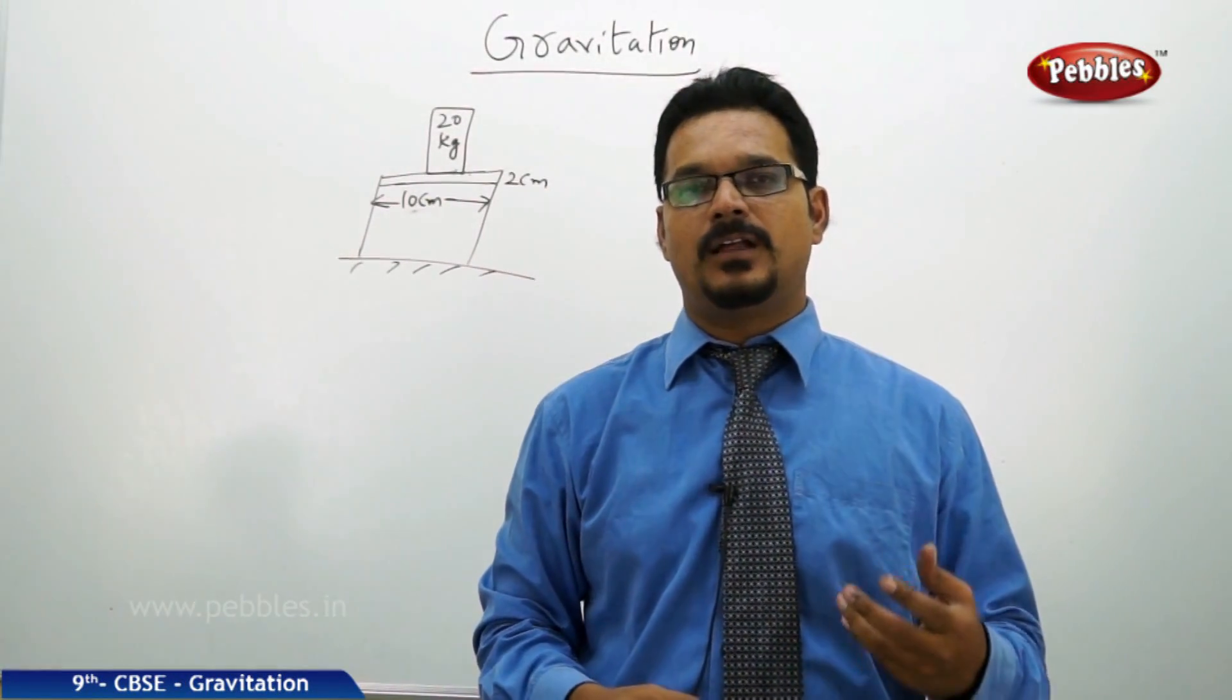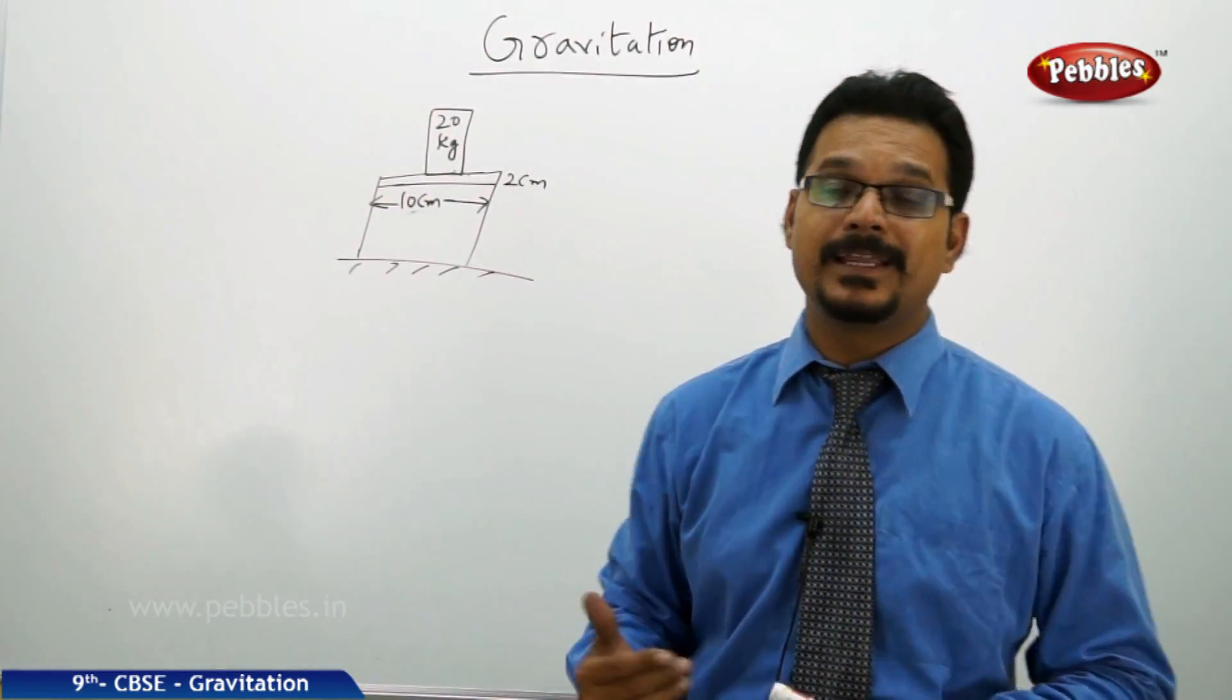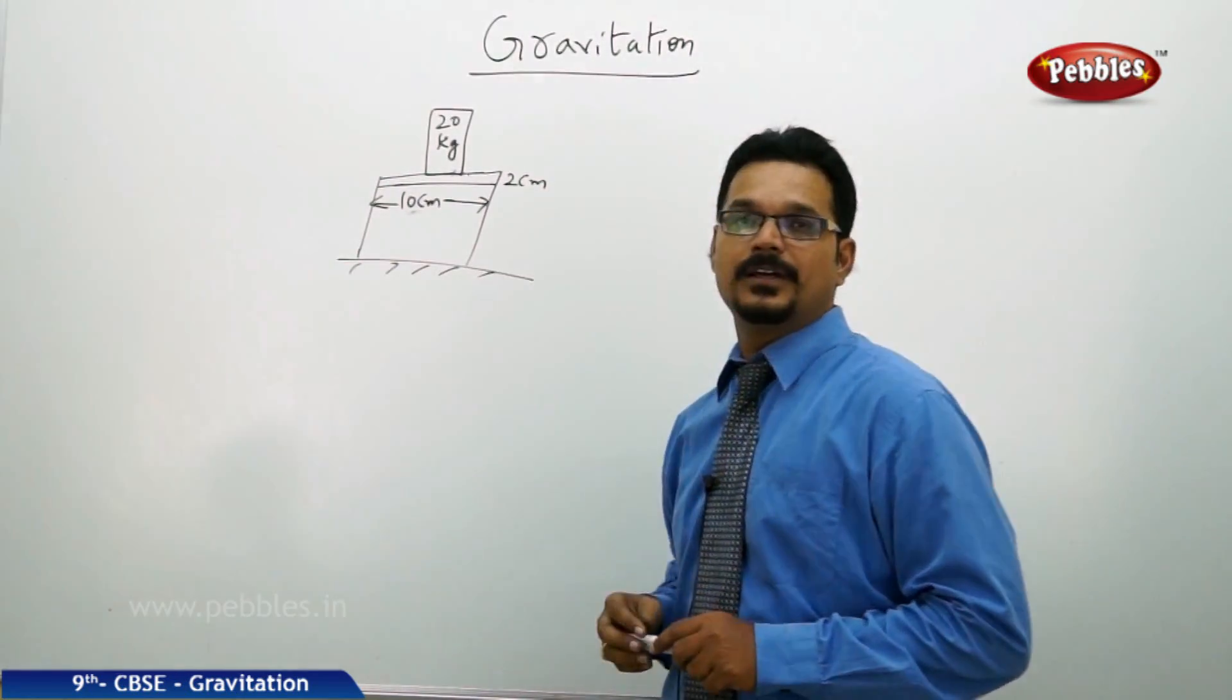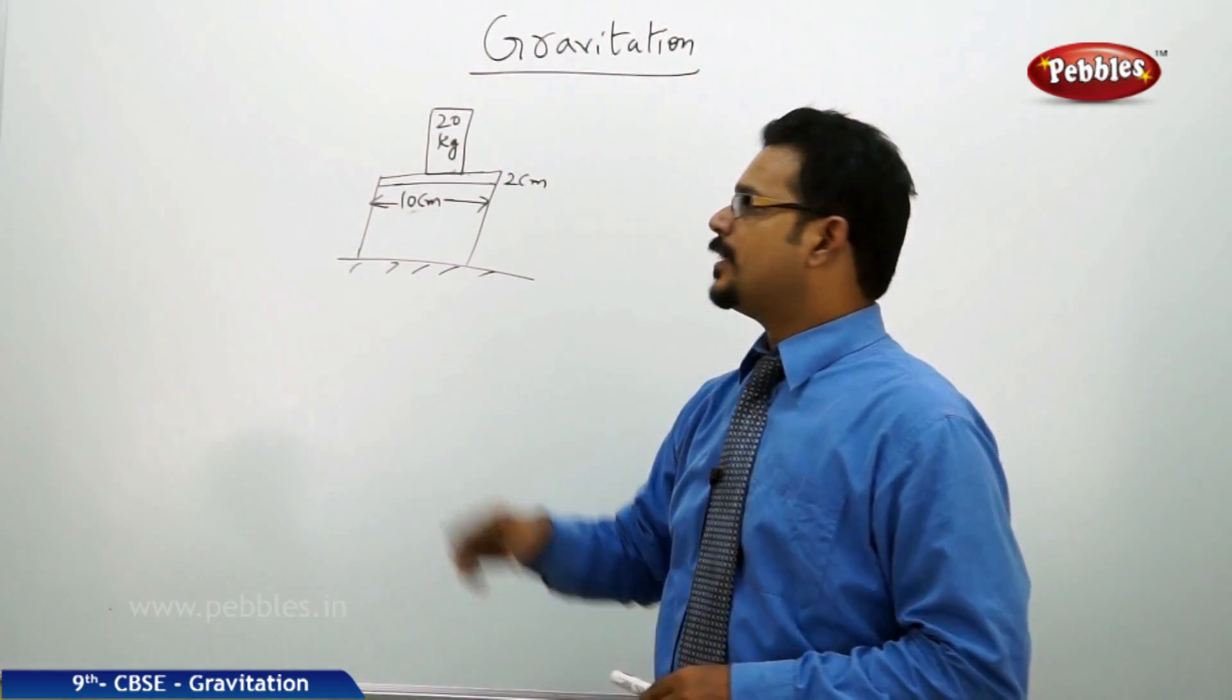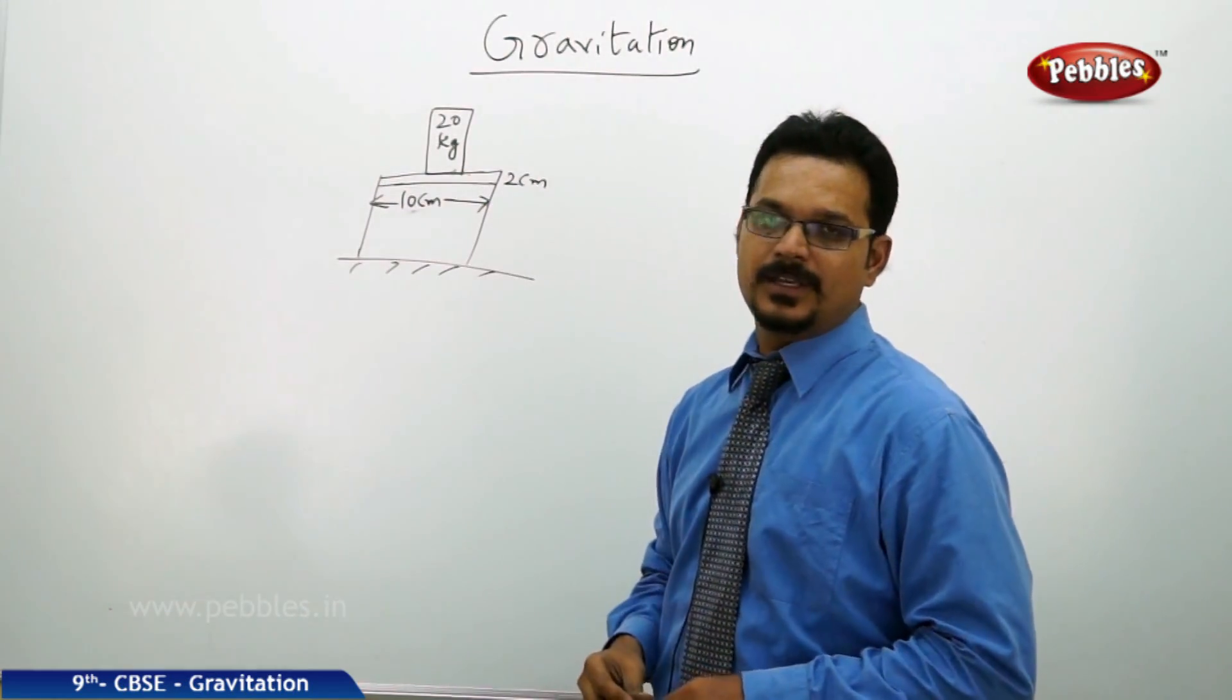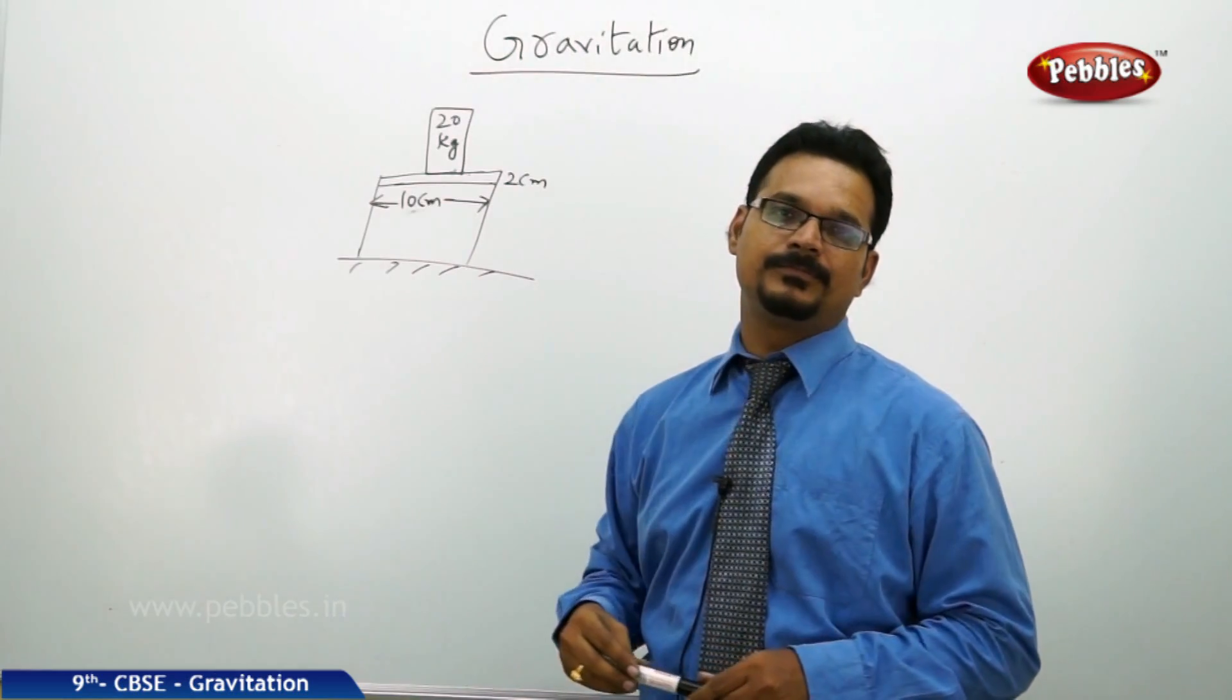Now, how can we apply the pressure formula P = F/A in real cases? See the example here: a 20 kg mass is on the table. The table surface has length 10 centimeters and width 2 centimeters.